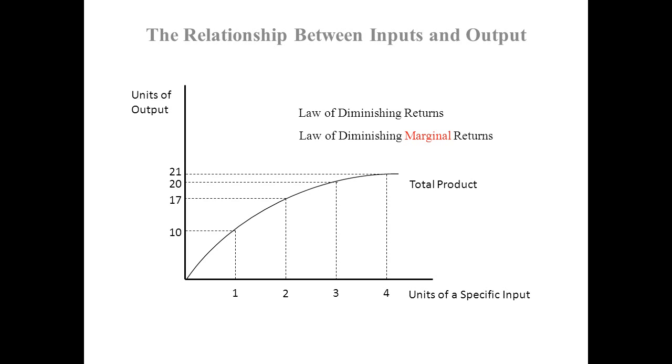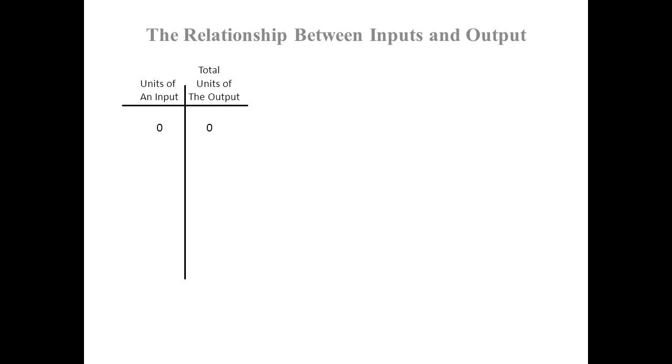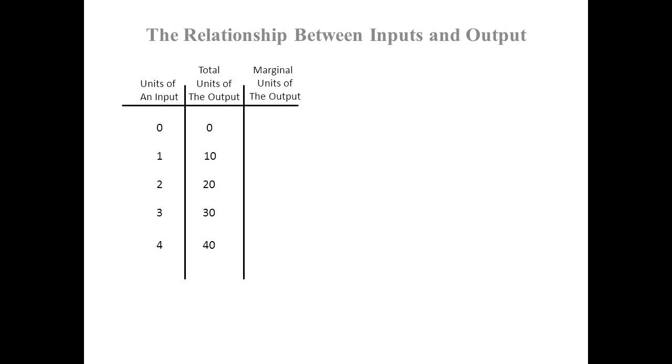As you are adding more units of the specific input, the total amount of output is going up — not diminishing. It's the marginal returns that are diminishing. Let's look at a schedule. In the first case, where the production function was a straight line out of the origin: zero input gives zero output, one unit gives 10, two gives 20, three gives 30, four gives 40.